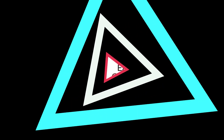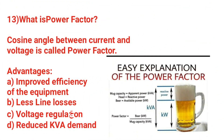What is the power factor? The cosine of the angle between current and voltage is called the power factor. Advantages: it improves the efficiency and equipment life, reduces line losses, and improves voltage regulation.